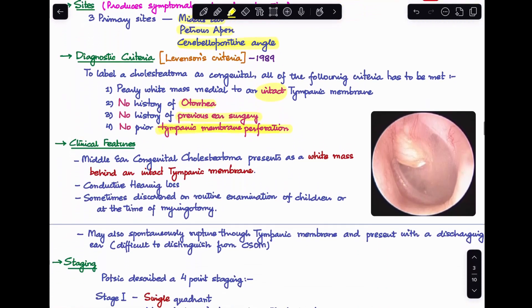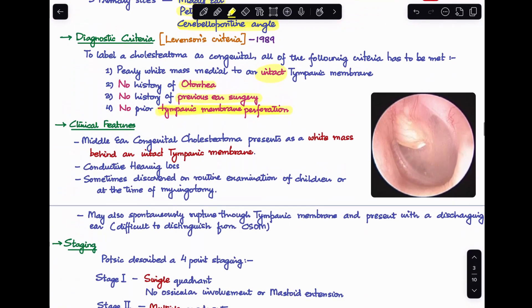Coming to clinical features of congenital cholesteatoma, it is seen as a pearly white mass behind an intact tympanic membrane. You can see in the image that the tympanic membrane is intact but you can see this pearly white mass medial to it. Patient will also have conductive hearing loss. Sometimes this is discovered on routine examination or at the time of myringotomy, and it also has the capacity to spontaneously rupture through the tympanic membrane and present with a discharging ear. Then it can get difficult to distinguish from a typical case of CSOM.